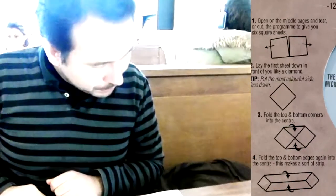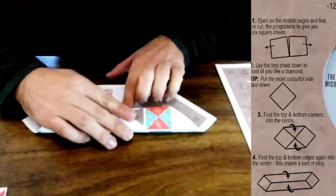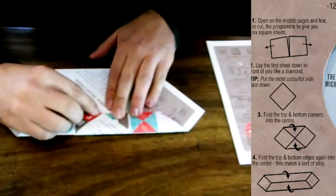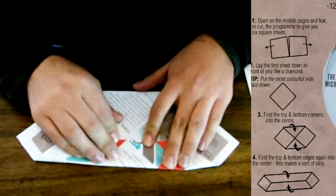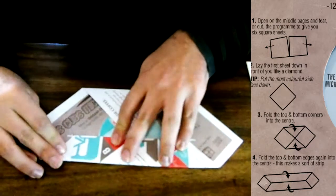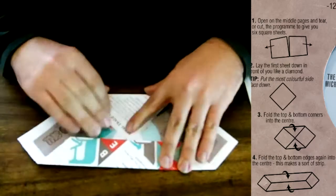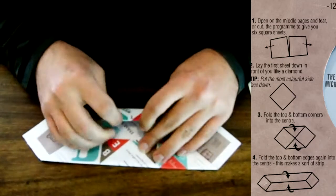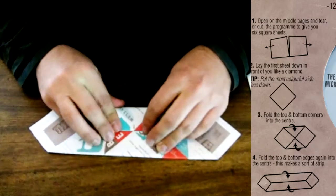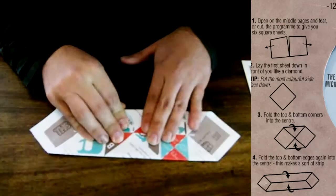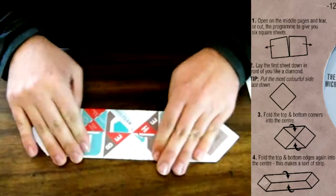Fold the top and bottom edges again into the center. This makes a sort of strip. So a little bit like this. And there's again, arrows. One, and like this. Oh, I like it. Okay. Next step.